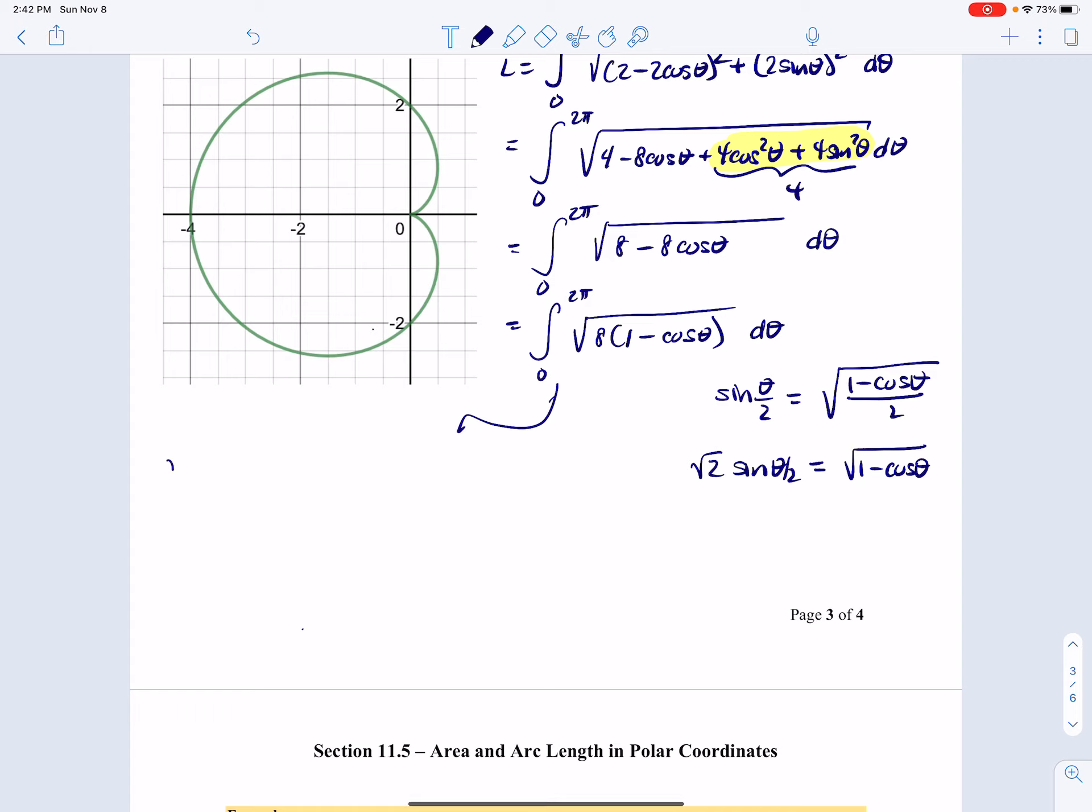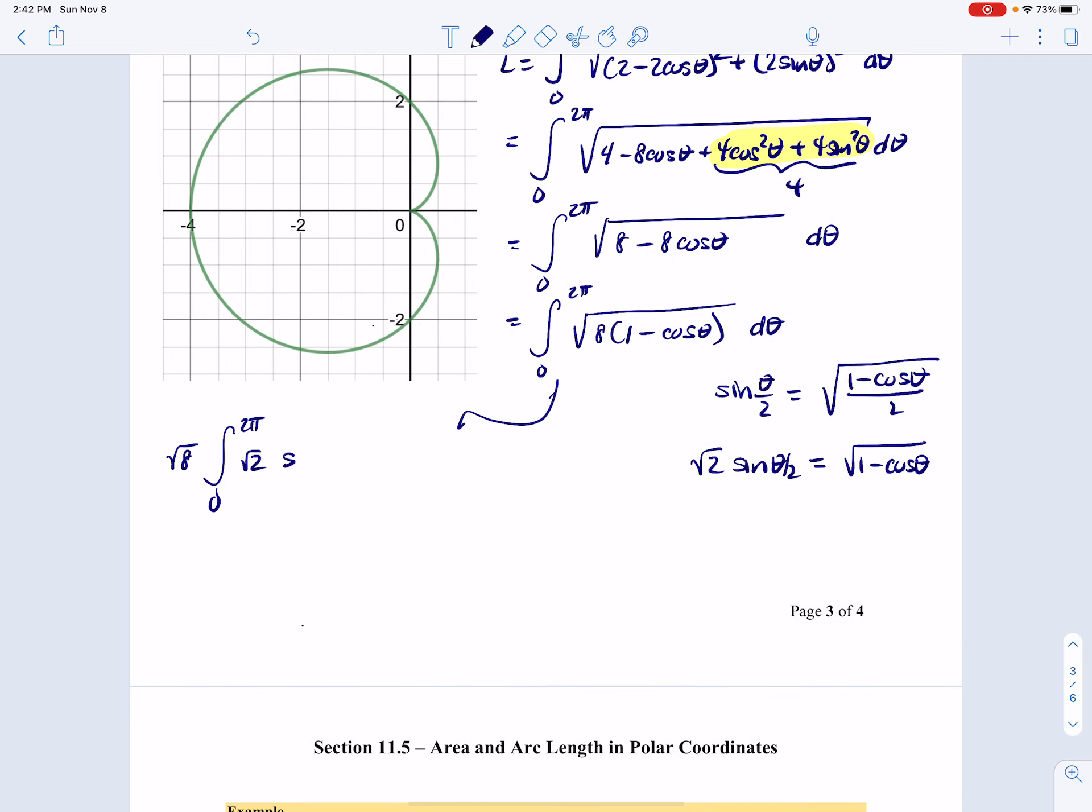And I'm going to say that this is the square root of 8 outside, integral from 0 to 2 pi. And square root of 1 minus cosine theta is the square root of 2 times the sine of theta over 2. There we go.